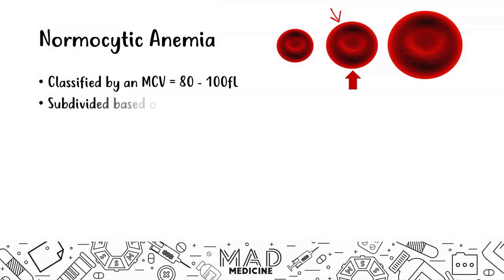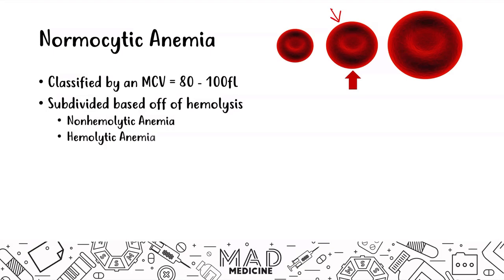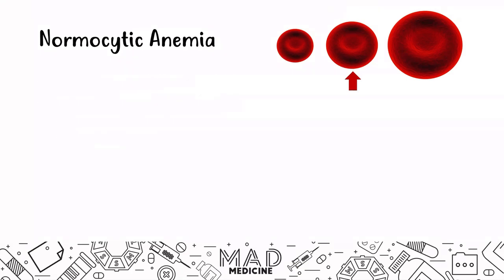When it comes to normocytic anemias, you can subdivide these based off of hemolysis. You can have non-hemolytic anemia that is normocytic, and you can have hemolytic anemia. The hemolytic anemias can be subdivided based off of intrinsic and extrinsic causes of hemolysis.